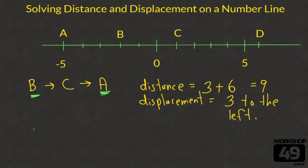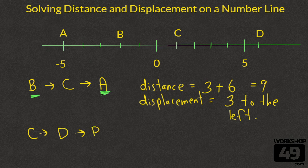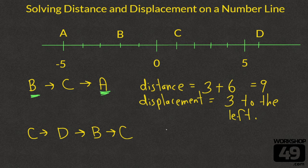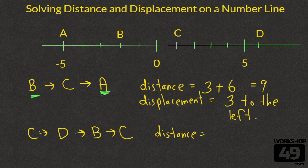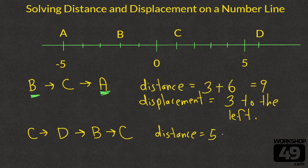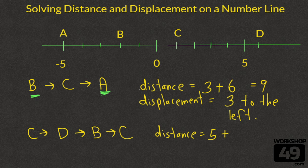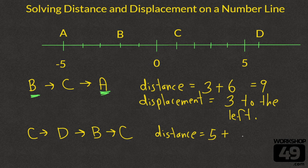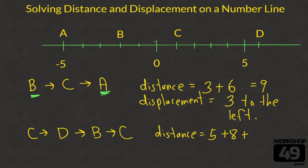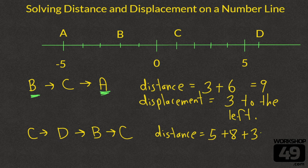Let's try one more: C to D to B to C. If we want our distance in this example, we first have to walk from C to D: 1, 2, 3, 4, 5. Then we have to go from D to B: 1, 2, 3, 4, 5, 6, 7, 8. And finally, the last leg of our journey, B to C: 1, 2, 3. For a total distance traveled of 16.